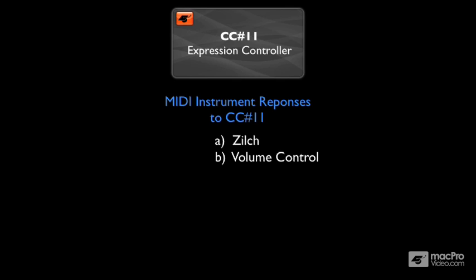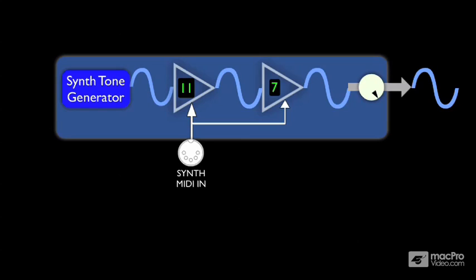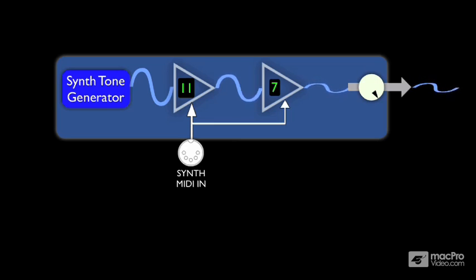That's because in a situation like this, you'll have two internal volume controls — one controlled by CC7, and the other controlled by CC11. And like CC7, this behavior may be built into the design of your sound module, keyboard, or plugin.